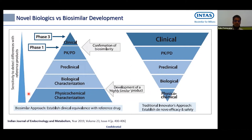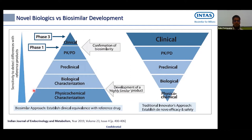We need to have extensive characterization to show that the product we intend to develop has very similar characteristics to the innovator. The sensitivity to detect differences is critical. The whole aim of biosimilar development is to have a very similar product to the innovator, so we need techniques and tools that can detect even small changes. Any small change could have biological as well as clinical impacts — for example, immunogenicity. The sensitivity of physicochemical and biological characterization tools is very high compared to clinical detection.